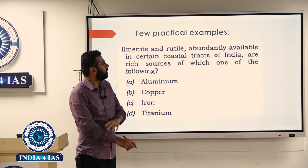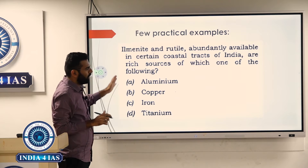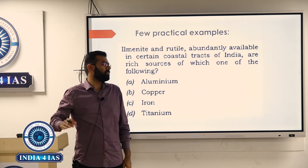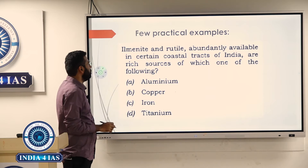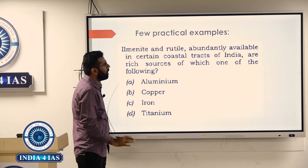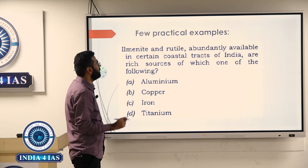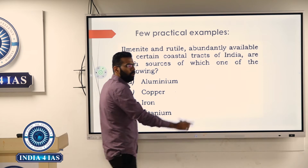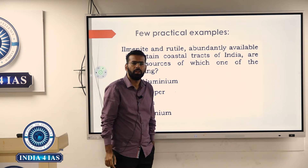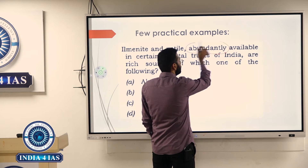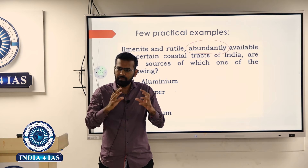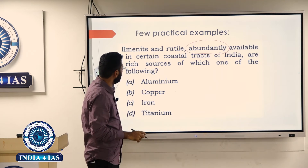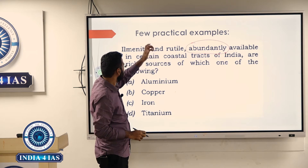Here is a 2023 question: 'Elm light and root oil, abundantly available in certain coastal tracts of India, are rich sources of which one of the following?' What is the extreme word here? 'Abundantly' — that is an assertive statement.